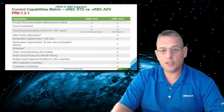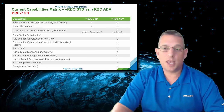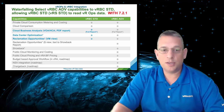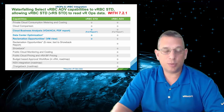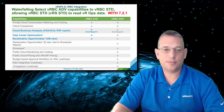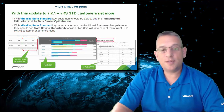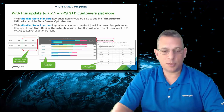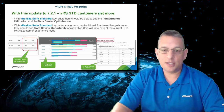As you see in the chart, prior to VRealize Business for Cloud 7.2.1, these were the capabilities of the VRBC Standard and Advanced Editions. Now, as of VRBC 7.2.1, we now have Cloud Business Analysis Reporting, Data Center Optimization, and Reclamation Opportunities for VM Views. The VRealize Suite Standard Edition now comes with even more capabilities than before. Standard Edition now gives customers the ability to see the infrastructure utilization and data center optimization information. When customers run the Cloud Business Analysis Report, they can see a cost savings opportunity section that's already filled in with the appropriate information.